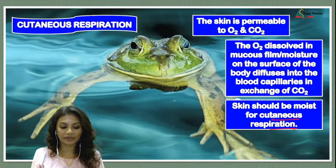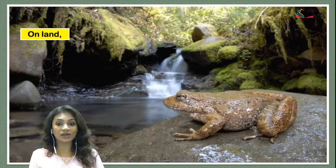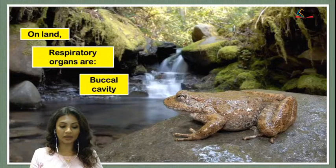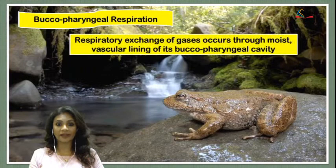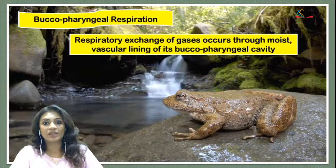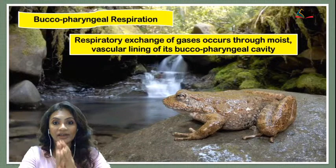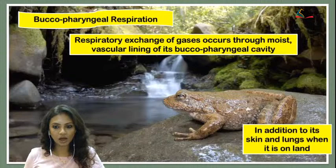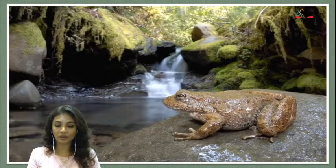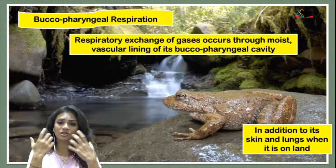When the frog is on land, the respiratory organs it uses are the buccal cavity, the skin, and the lungs. For buccopharyngeal respiration, the exchange of gases occurs through the moist lining of the buccal pharyngeal cavity, which has many blood vessels. The frog opens its mouth and because there are so many blood vessels in the lining, exchange of gases can take place there.